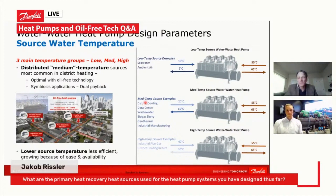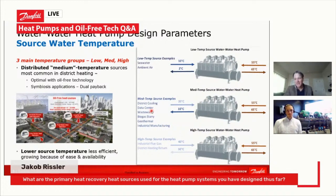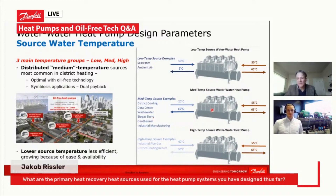For a district cooling application, you're reusing the district cooling return as the heat source. For a data center, you're cooling that data center and recovering the heat to, for example, a district heating system — or a proximity large heat load. Wastewater is actually, if you look historically in Europe and specifically at district energy systems, the most common application of heat recovery heat source for district heating. Biogas slurry is a related one where you're making use of the cooling to provide more efficient natural fertilizer back to the farmers of those biogas plants and then recovering the heat to the district heating.